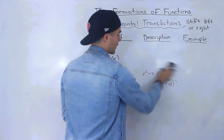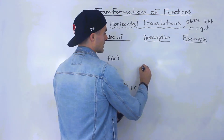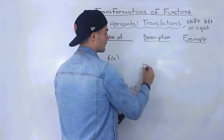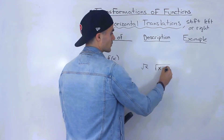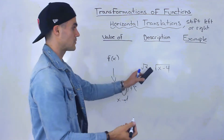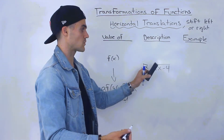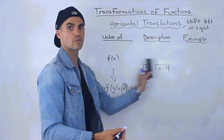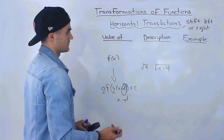Another parent function example: if we have the square root of x, we could have the square root of x minus 4. That would be taking the square root of x and shifting it 4 to the right.